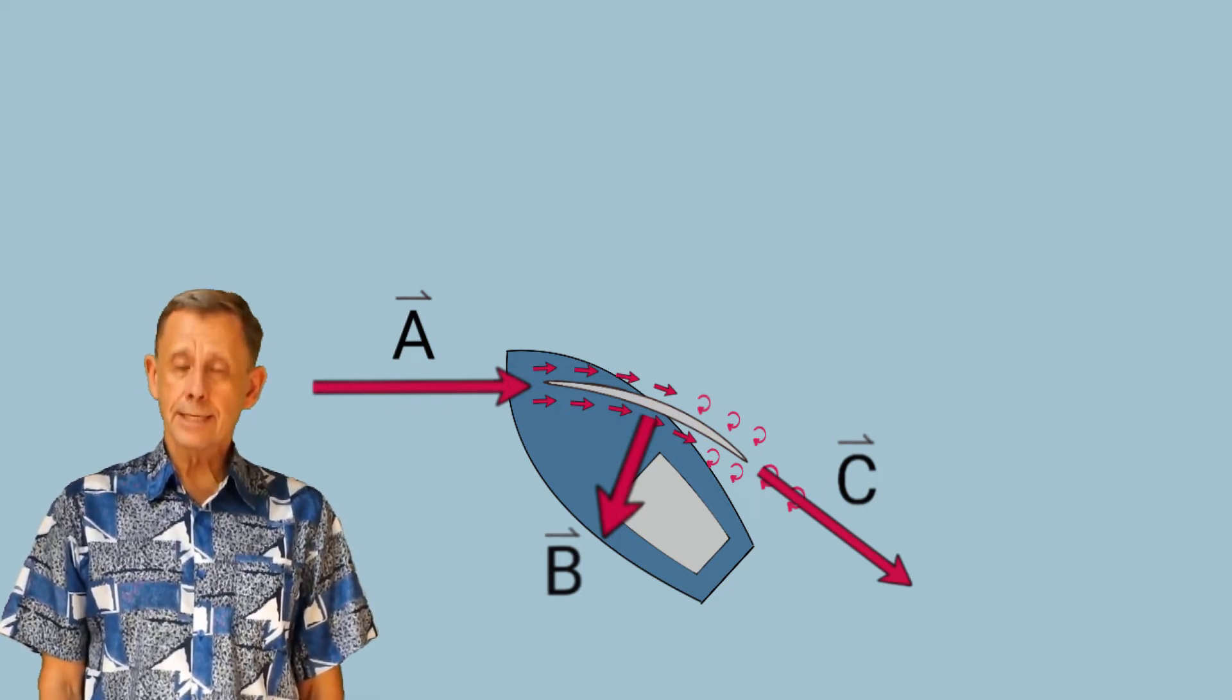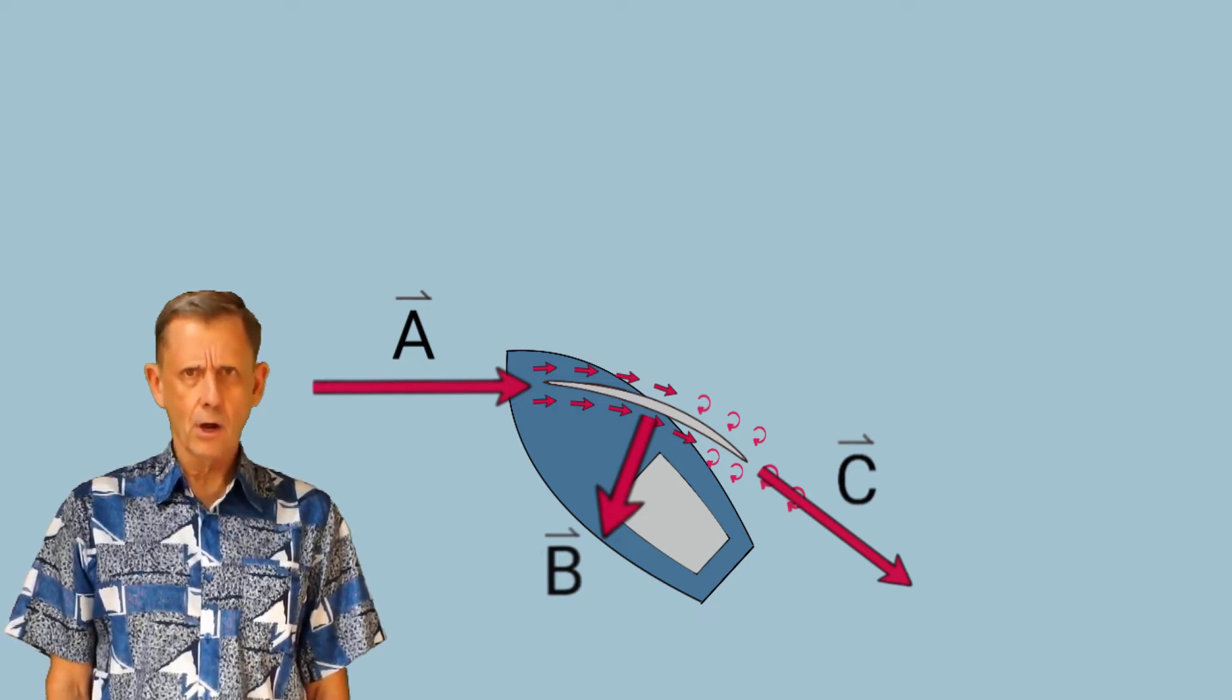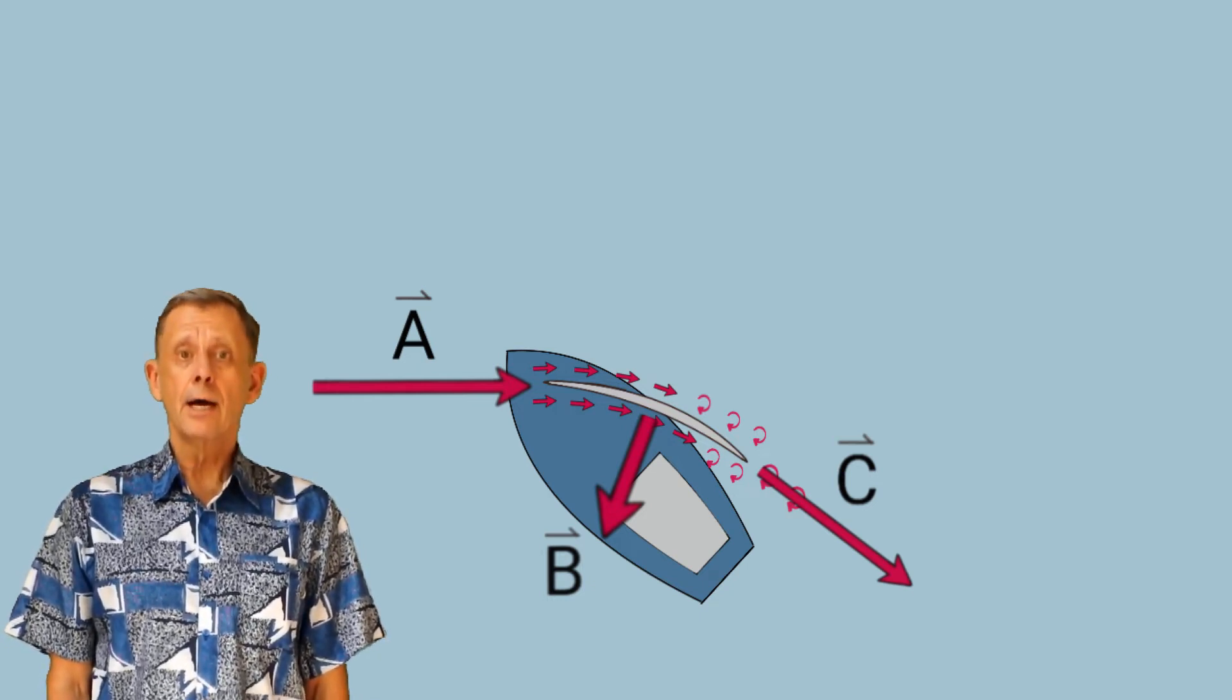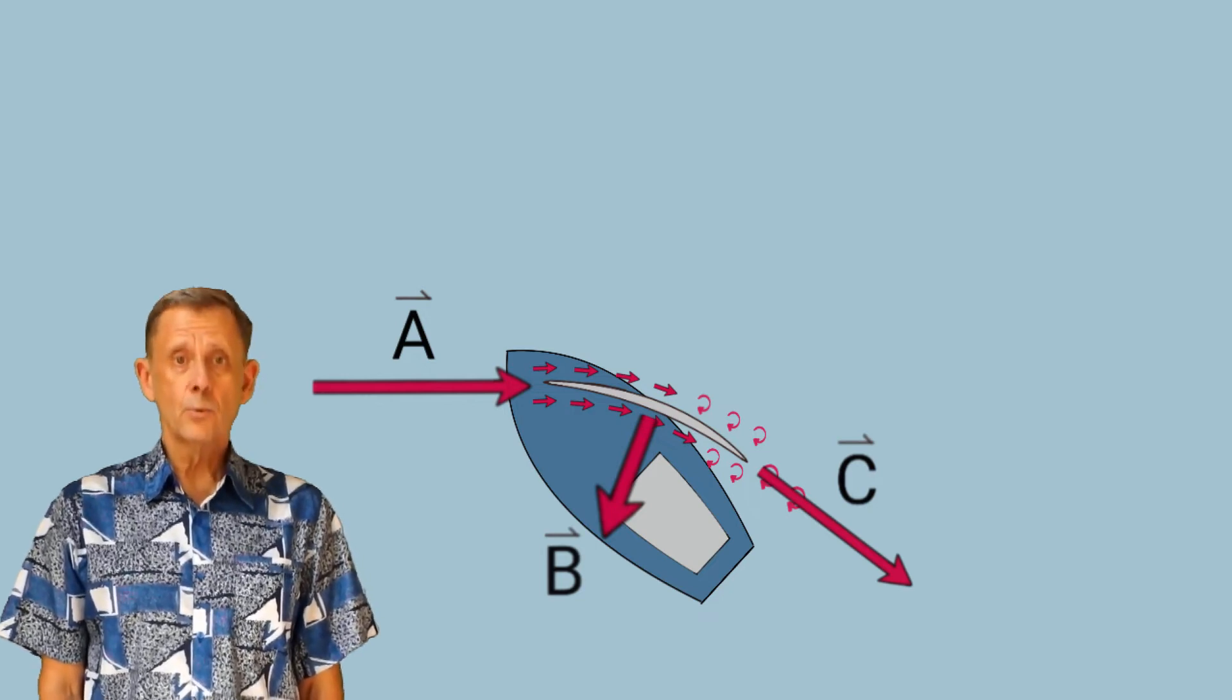First, sails are flat sheets. They don't look like airfoils at all. And second, stunt planes seem to be able to fly upside down very well with inverted airfoils.